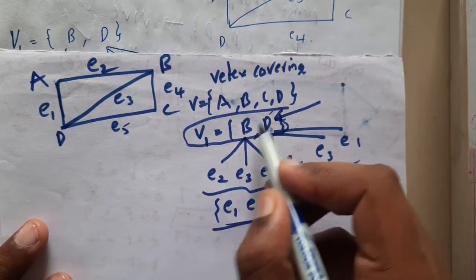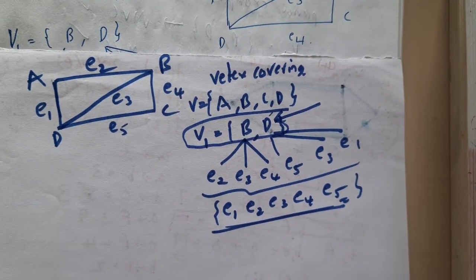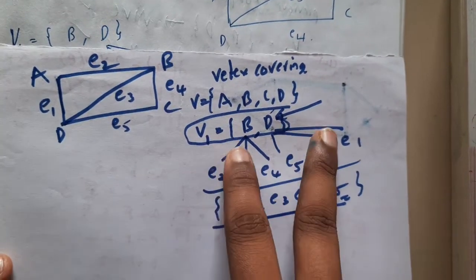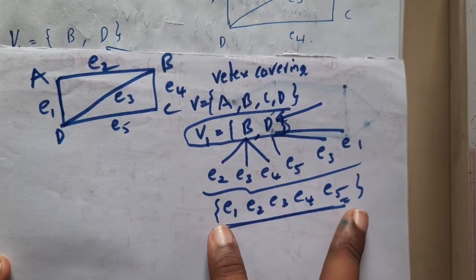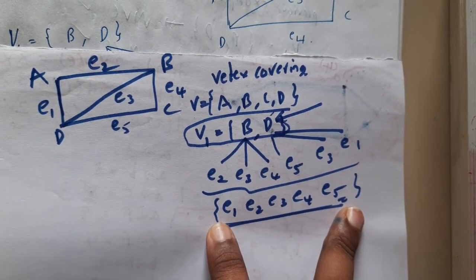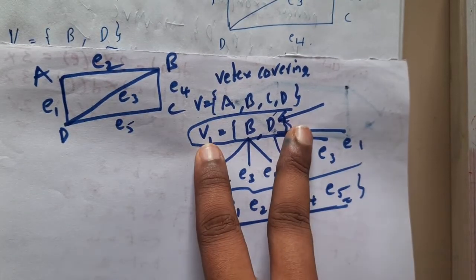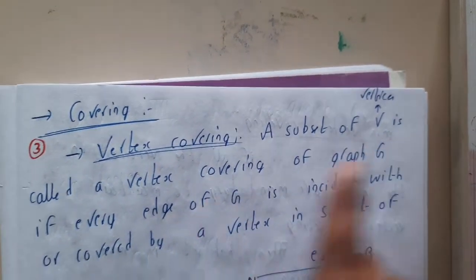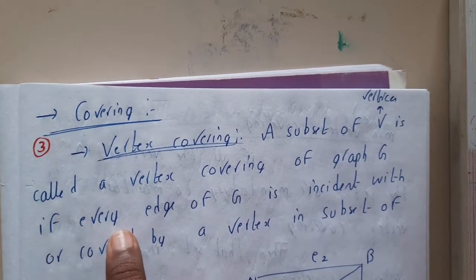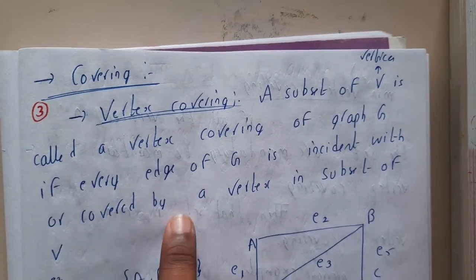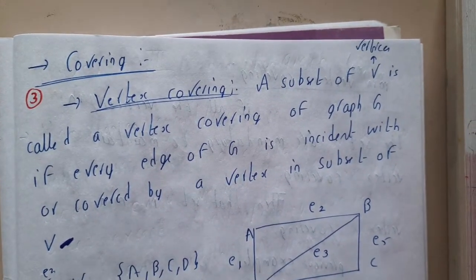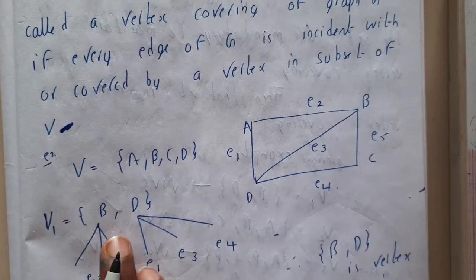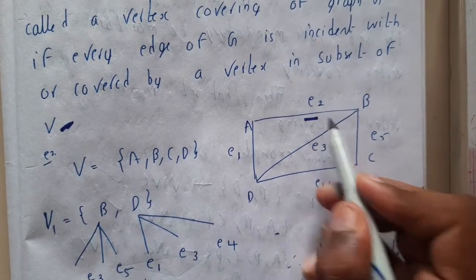Since the small subset v1 covers all edges, it is a vertex cover for this graph. The concept is: you take a small subset of the vertex set and check whether it covers all edges. If it does, that vertex set is a vertex covering for the given graph. Formally, a subset of vertex set V is called a vertex covering of graph G if every edge of G is incident with or covered by a vertex in that subset.